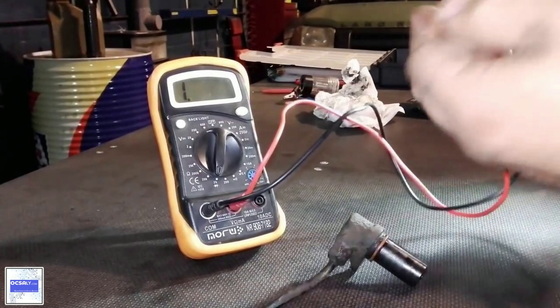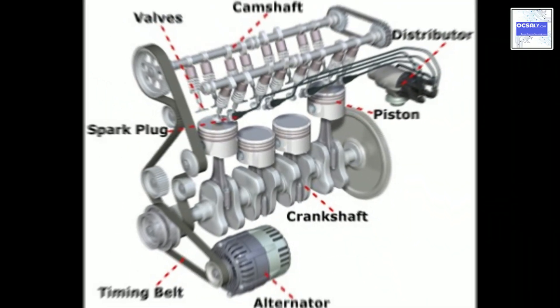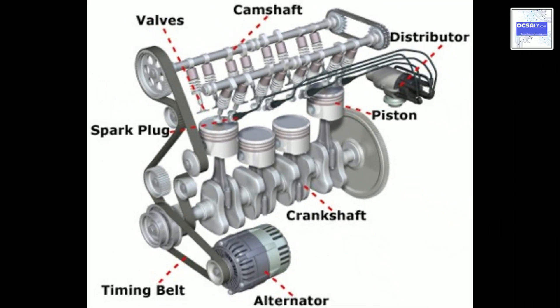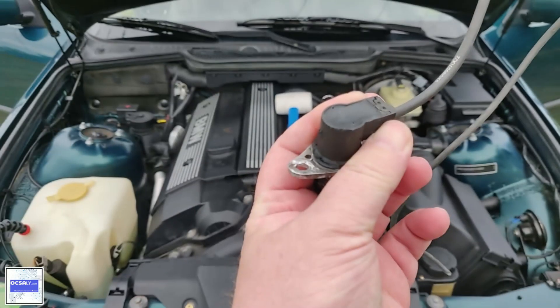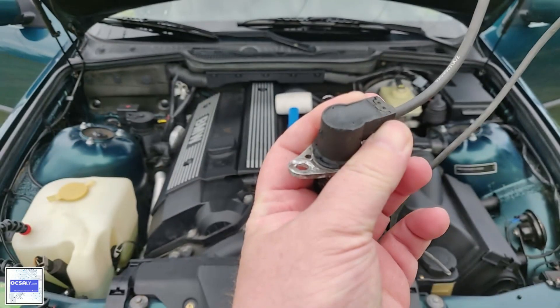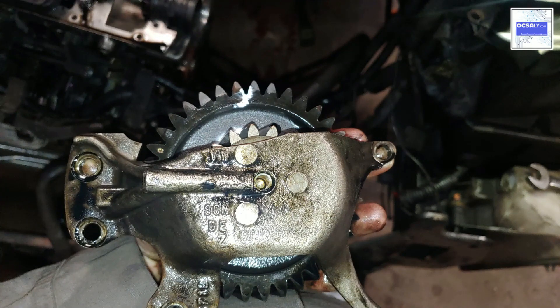The crankshaft position sensor measures the rotation speed and the precise position of the engine crankshaft. Without a crankshaft position sensor, the engine wouldn't start.